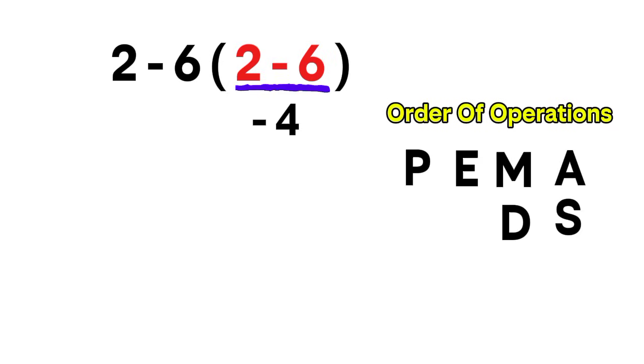So now the expression becomes 2 minus 6 times negative 4. Now we have 1 subtraction and 1 multiplication. According to PEMDAS, multiplication comes before subtraction. So we must multiply first.